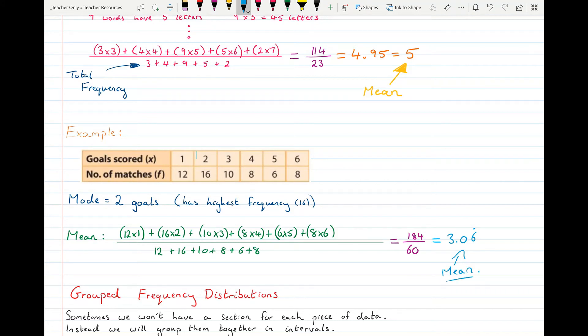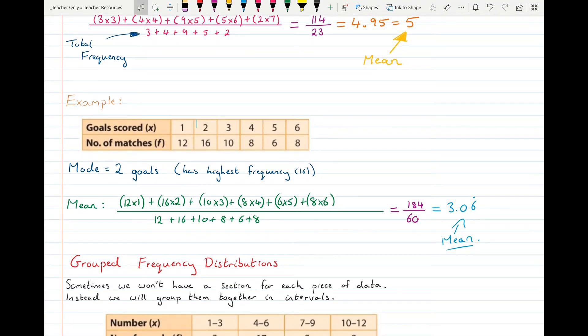Those are just the standard frequency tables. We often come across grouped frequency tables where we won't be able to tell a specific piece of data but instead they're gathered together because otherwise our table would be far too large. So instead we just group the data together.